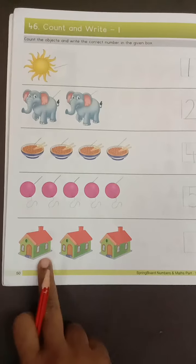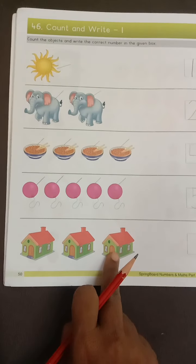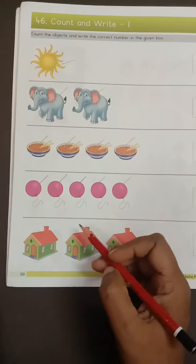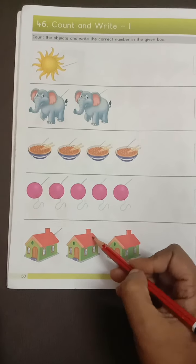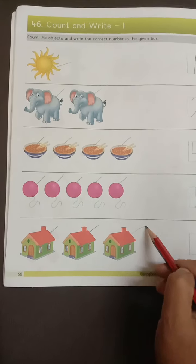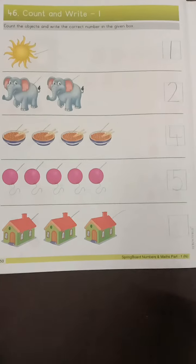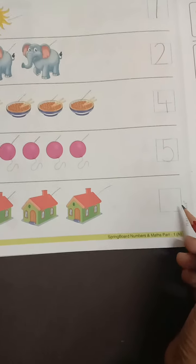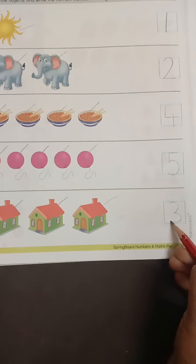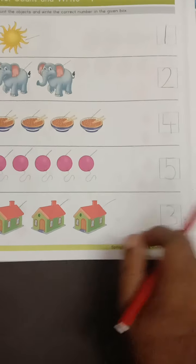Next one is house. These are houses. So how many houses are there? So count with me. One, two, three. Three houses are there. So we will write number three in the box.